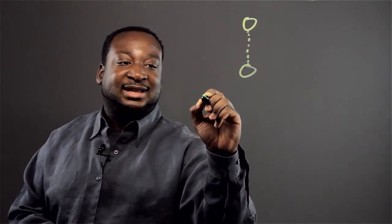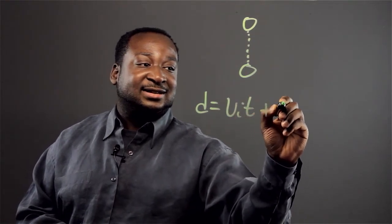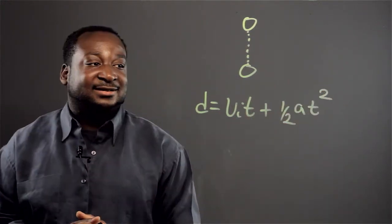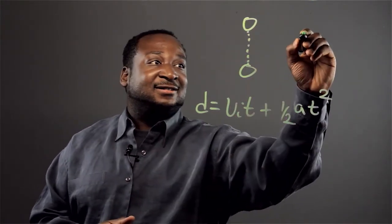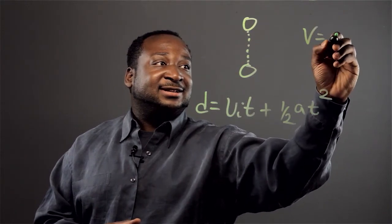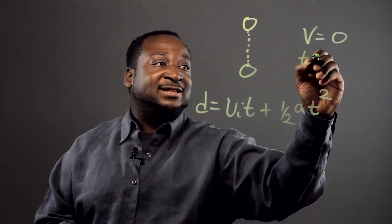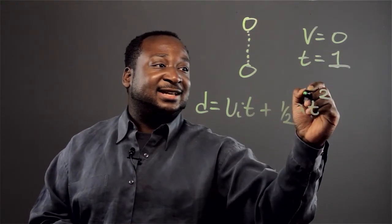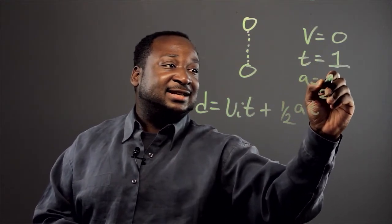Let us use the physics formula. Displacement d equals v_i times t plus one half a t squared. Since we're releasing this ball, our initial velocity is going to equal zero. We want to find where it goes after one second, so t is going to be equal to one. And g, which is our acceleration a, is 9.8.